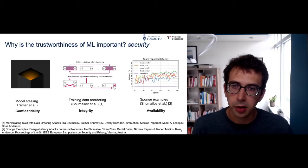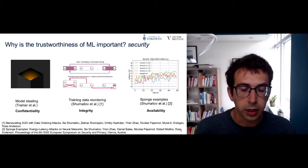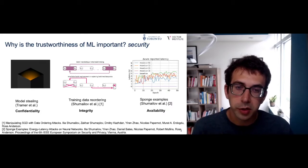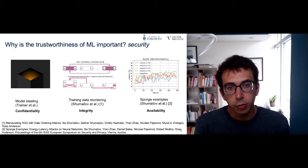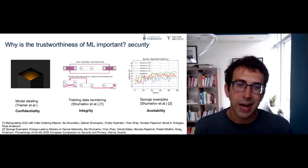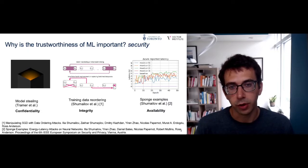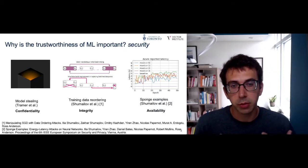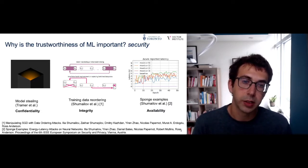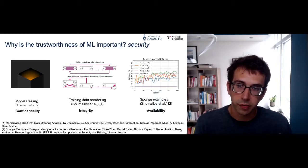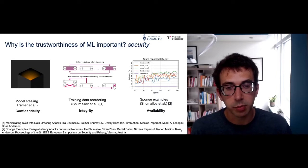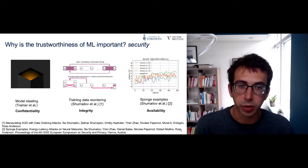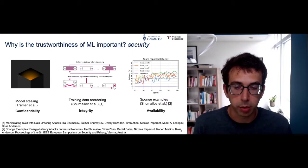I'll discuss test time attacks like adversarial examples later. The third component of security is availability. We've started to have initial results — which we call sponge examples — where we craft inputs designed to maximize the latency of the model's inference at test time. This allows an adversary to increase the energy consumption of the machine learning system, and even drain the battery of a device by feeding it specific inputs. I encourage you to check out the paper at the bottom of this slide.